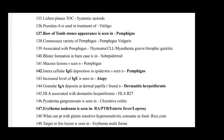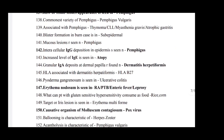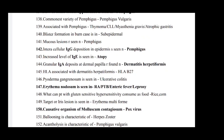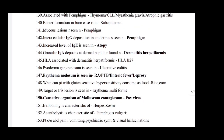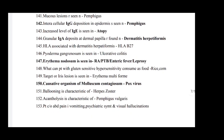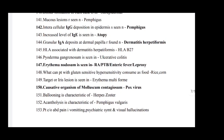Cyclosporin A is used in treatment of vitiligo. Tombstone appearance is seen in pemphigus. Commonest variety of pemphigus is pemphigus vulgaris. Pemphigus is associated with thymoma, chronic lymphoid leukemia, myasthenia gravis, and atrophic gastritis. Blister formation in burns is in subepidermal layer. Mucosal lesions are seen in pemphigus. Intracellular IgA deposition in epidermis is seen in pemphigus. Increased level of IgE is seen in atopy.